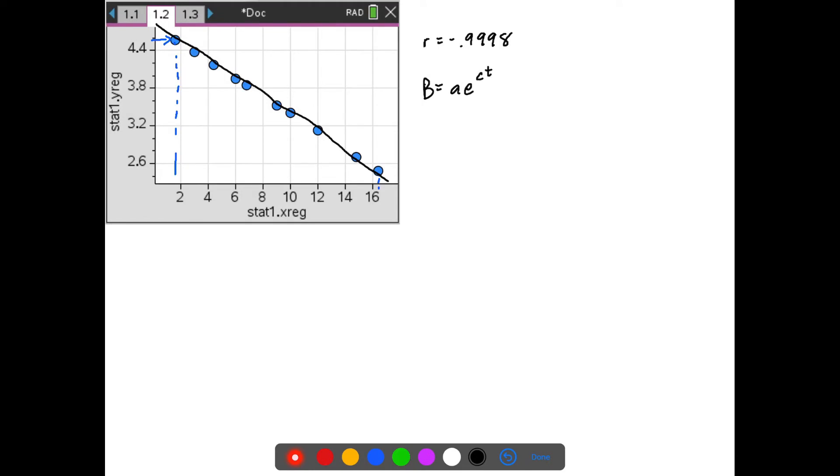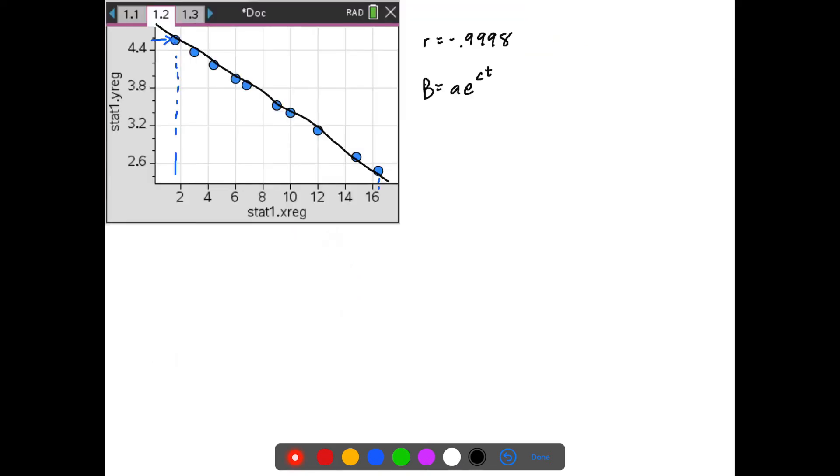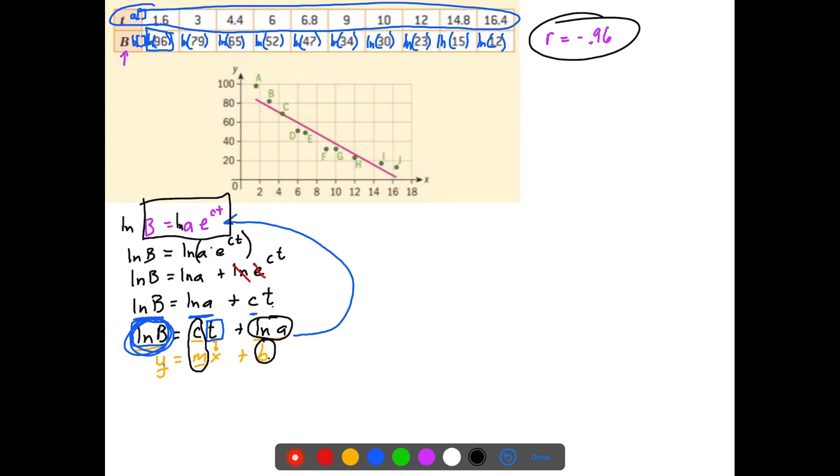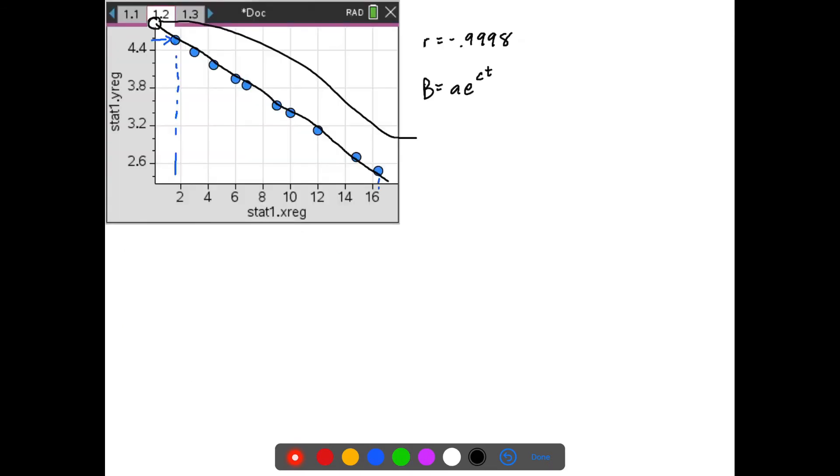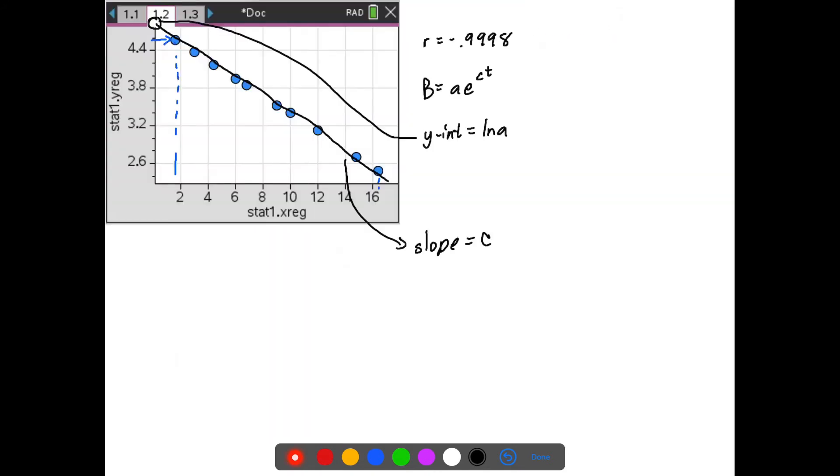Now remember, we found out here that C was the slope, and then the natural log of A is my Y intercept. So I can go in here and I can get my Y intercept and that would be B, which is the natural log of A right there. And so I could say that the Y intercept, whatever that value is, is equal to natural log of A. Then I could find the slope and the slope is equal to C. That's what we saw right here, that the slope was equal to C. And then once I have C and A, I would actually have an exponential graph, B equals AE to the CT, that is a better fit than the linear graph would have been.